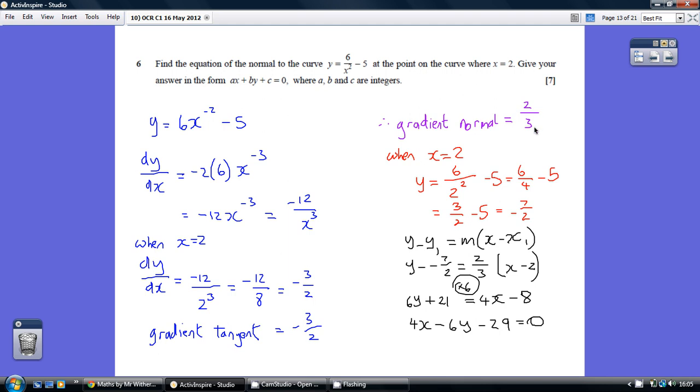So we know the gradient of the normal. We now need to work out the coordinate of one point on the normal. Well we know the x value is 2, so we need a y value. So let's slot 2 back into the initial curve. So 6 over 2 squared minus 5, so 6 over 4 minus 5, which is 3 over 2 minus 5, which is minus 7 over 2.